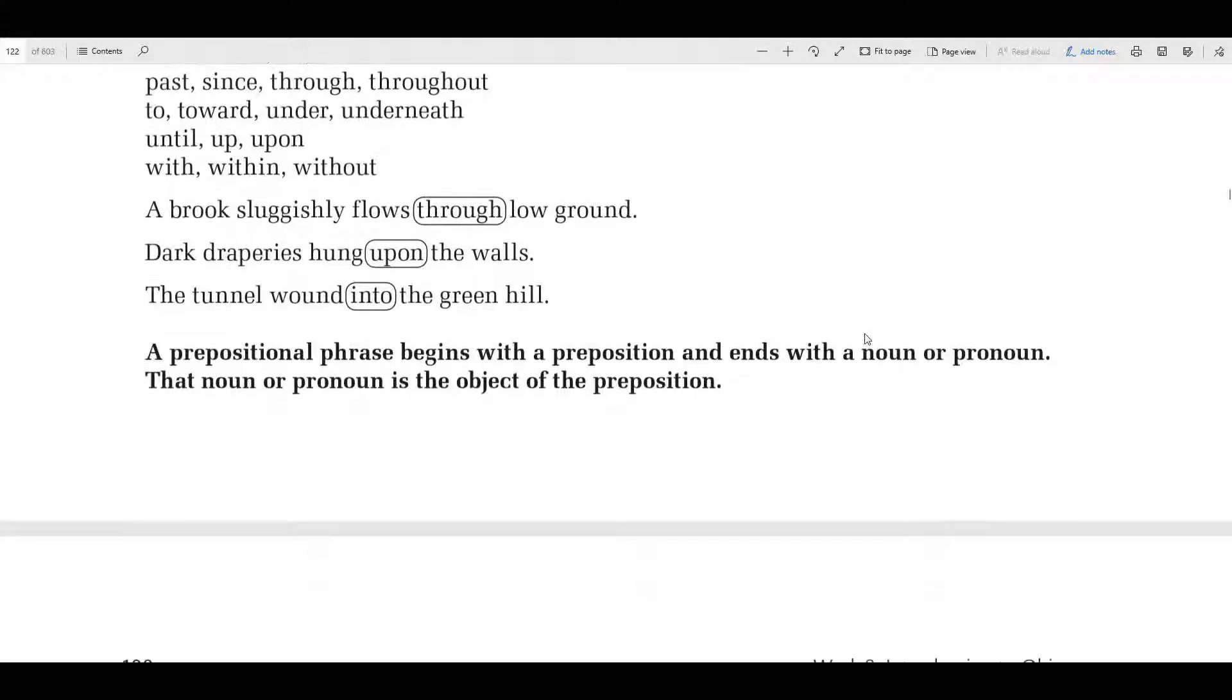Now, a prepositional phrase begins with a preposition and it ends with a noun or pronoun. That noun or pronoun is the object of the preposition. So right here, a brook sluggishly flows through low ground. This right here, through low ground, is the prepositional phrase. Starts with a preposition, ends with a noun or a pronoun.